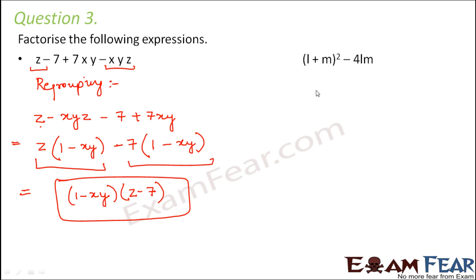Next expression is (l + m)² - 4lm. First of all, let's expand (l + m)². This is in the form of (a + b)². So this would be a² + 2ab + b², which gives l² + 2lm + m² minus 4lm.